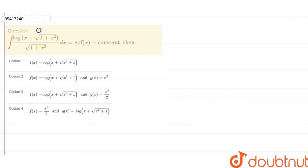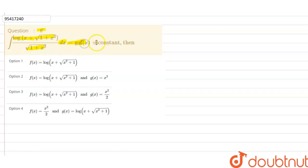The given question is: if the integration of log(x + √(1+x²)) / √(1+x²) dx equals g(f(x)) plus constant, then we have to find the value of f(x) and g(x).